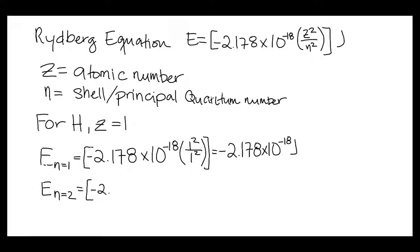If we now go to the n equals 2 level, and instead of using 1 for the n value, we use a 2, what we get is a value of negative 5.445 times 10 to the negative 19 joules.